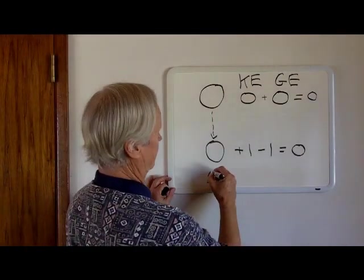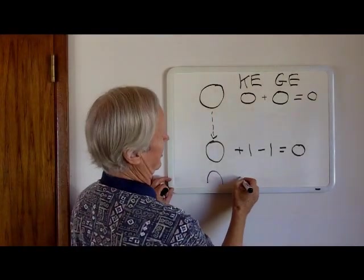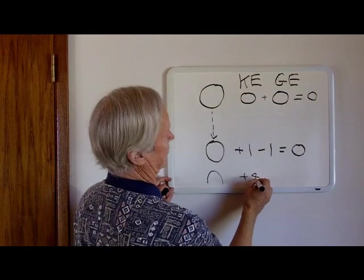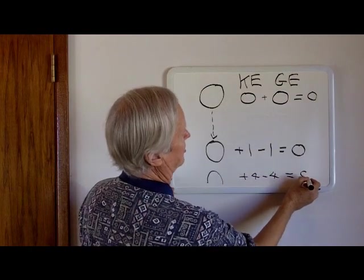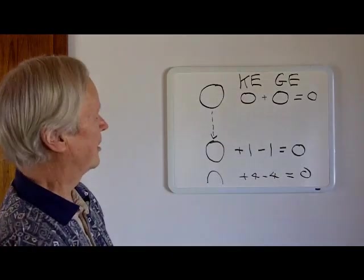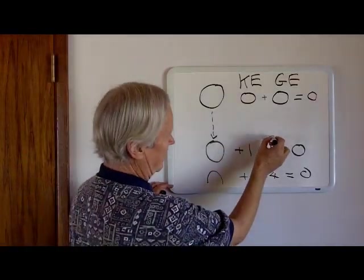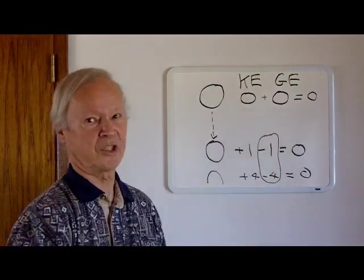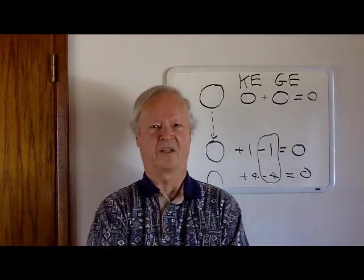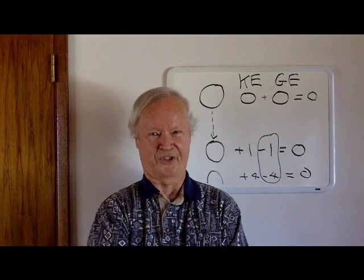As the object continues to fall, at a later time this may equal plus four minus four equals zero. This negative part of the equation tells us that gravity is negative energy.